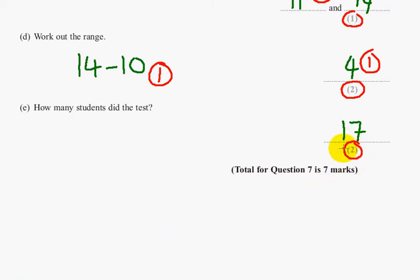And the first mark is for adding at least 4 correct heights out of 5, so adding 4 correct heights out of 5 is enough to get you the first mark. The second mark comes from the final answer of 17. And that's it for question 7, parts A, B, C, D and E.